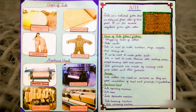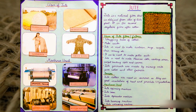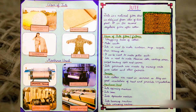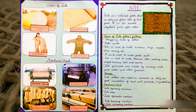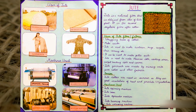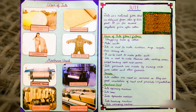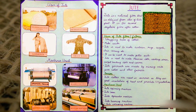Machines used for the production of jute: Jute Spinning Machine, Jute Loom, Jute Spreader Machine, Jute Beaming Machine, and Jute Weaving Machine. Thank you.